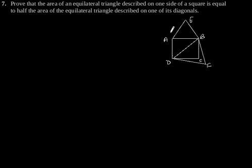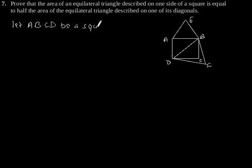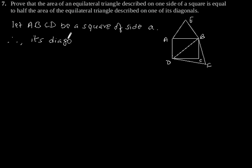To prove this, let us consider this figure, in which ABCD is a square. Let ABCD be a square of side A. Therefore, its diagonal will be square root of 2A.